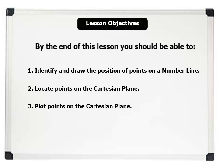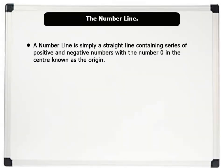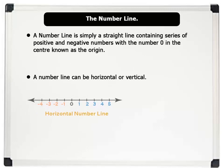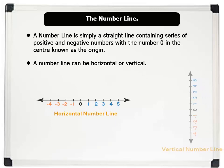Let us now proceed. A number line is simply a straight line containing series of positive and negative numbers with the number zero in the center known as the origin. A number line can be horizontal or vertical.